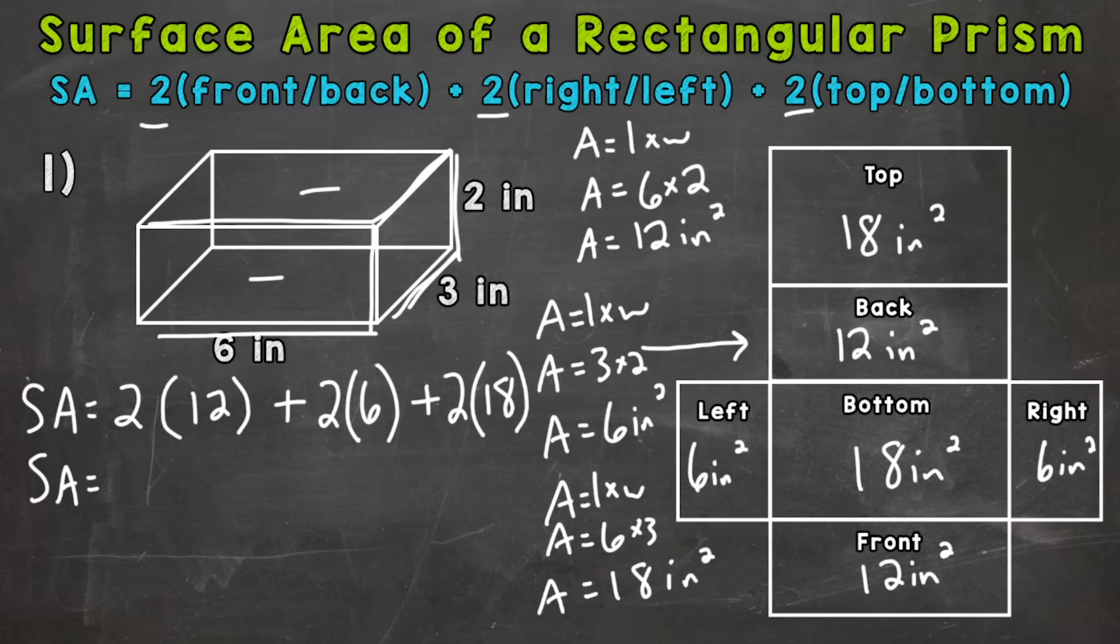Now, let's start solving. 2 times 12 is 24. 2 times 6 is 12. Plus 2 times 18 is 36. So the top,